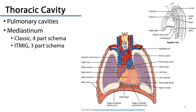Let's review the region that we're discussing. Within the thoracic cavity there are three subspaces. Laterally we have the pulmonary cavities which contain the lungs surrounded by the pleura. Medially we have the mediastinum, and that mediastinum may be divided into the classic four-part schema of superior, anterior, middle, and posterior mediastinum, or it may be divided the way that the International Thymic Malignancy Interest Group divides it into the three-part schema. We'll be discussing the posterior mediastinum which falls into the classic anatomical four-part schema.